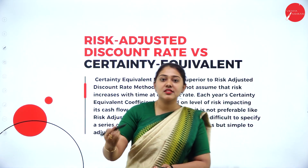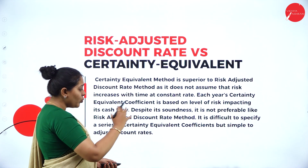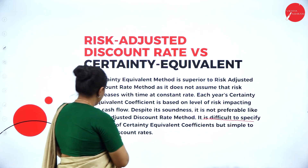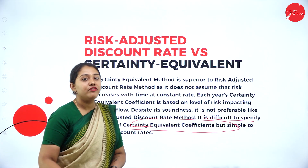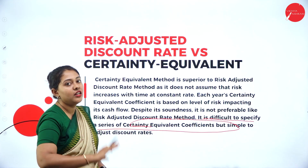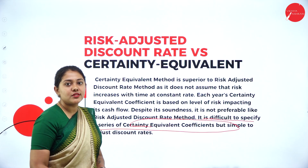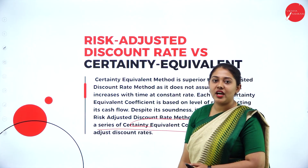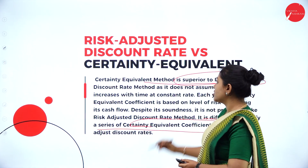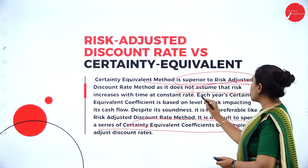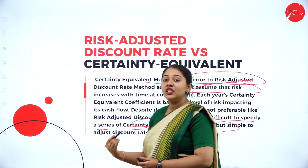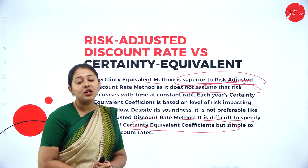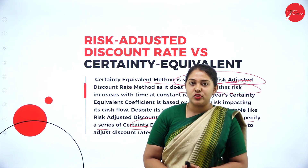Regarding risk adjusted discount rate versus certainty equivalent approach: some feel the risk adjusted discount rate is easier, while others feel certainty equivalent is easier, as certainty equivalent coefficients can be more difficult to determine than simply adjusting a discount rate. The certainty equivalent method is considered superior to the risk adjusted discount rate method as it does not assume that risk increases with time at a constant rate. However, it ultimately depends on the management and the company undertaking the project.